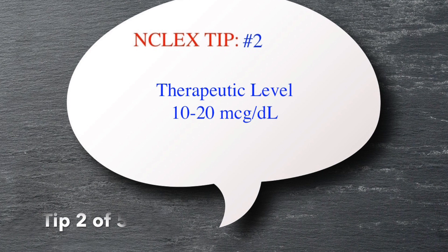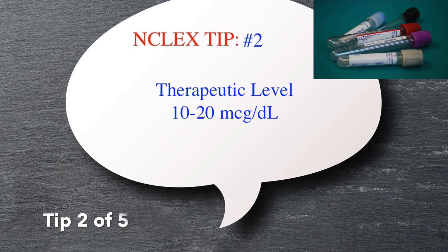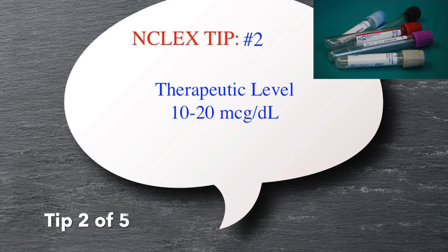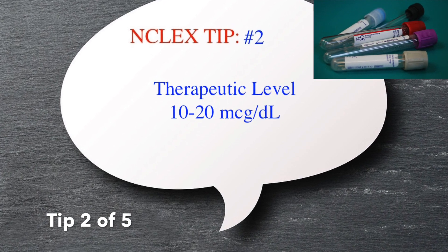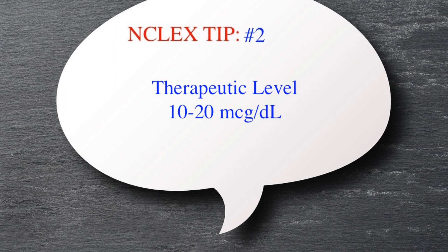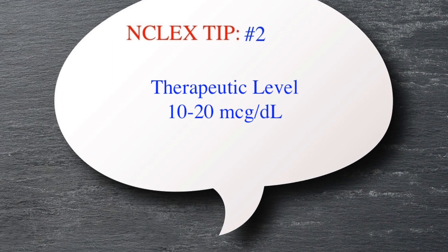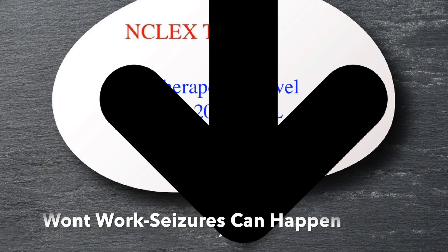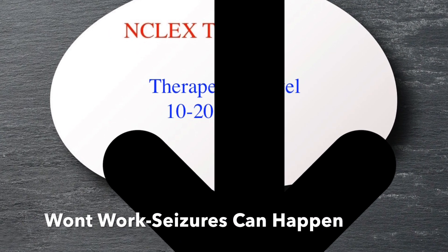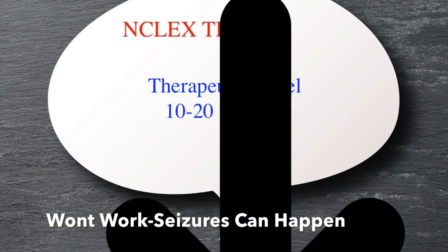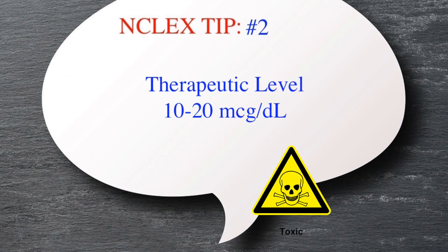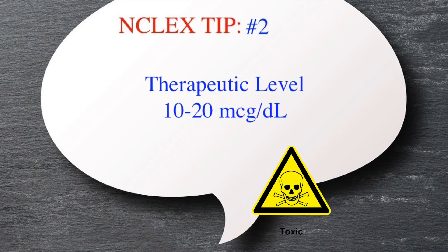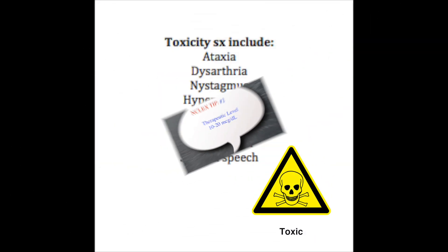Tip number two: therapeutic levels of Phenytoin and Dilantin is 10 to 20. This is important to know because if it's too low, the medicine won't work. And if it's too high, you can have toxicity. And here are some of the signs and symptoms of that.